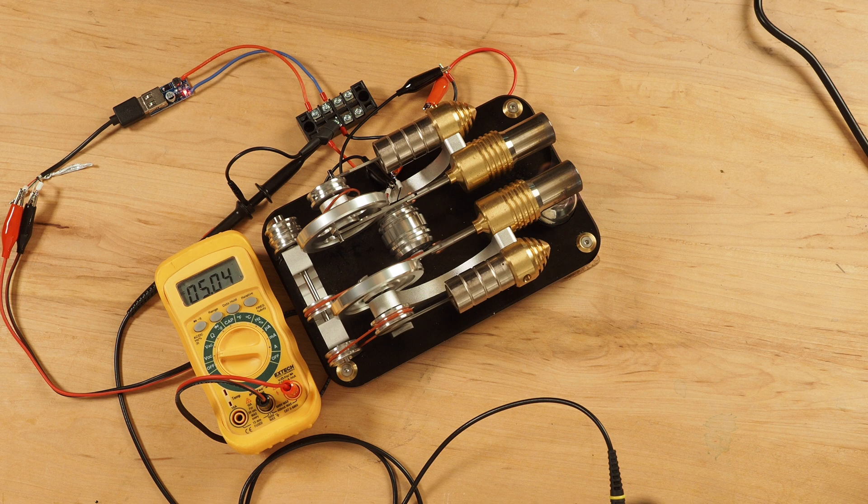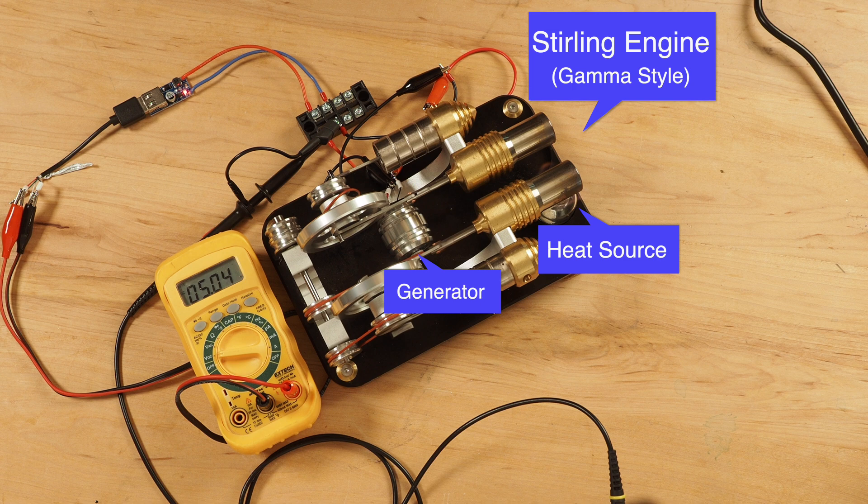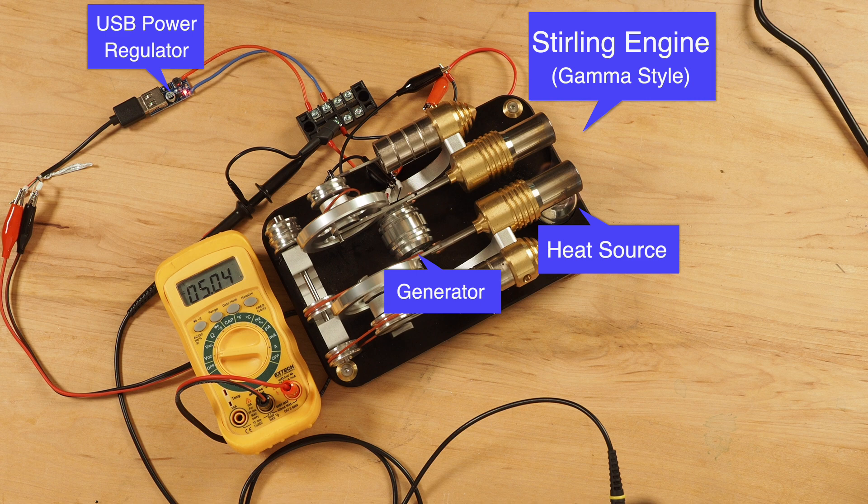This is what our T-Lite experimental charging setup looks like. We have a gamma sterling engine, a heat source, a small DC electric motor that will act as the generator, a USB power regulator as I don't want to blow up my phone, and a digital multimeter to take voltage and current readings.